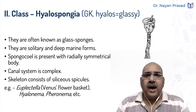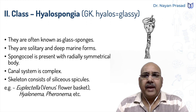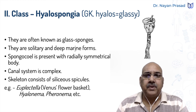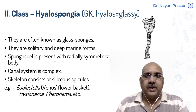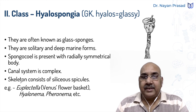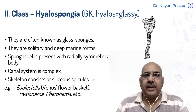Now, the next class — Hyalospongia. The name has been derived from Greek language, in which hyalos means glassy. They have a glass-like transparent body, and that's why they are often known as glass sponges. They are solitary, living singly, and are deep marine forms — remember, the previous group was shallow forms. Spongocoel is present with a radially symmetrical body. The canal system is of complex type, meaning branched. The skeleton consists of siliceous spicules, made up of silica, and this is one of the important features of Hyalospongia.